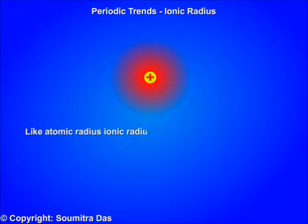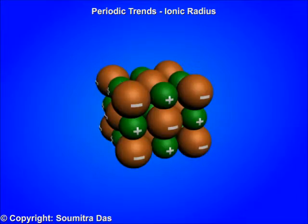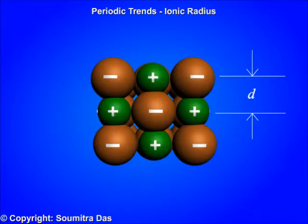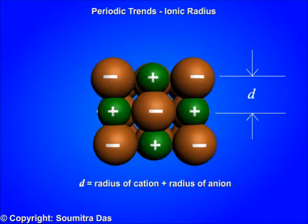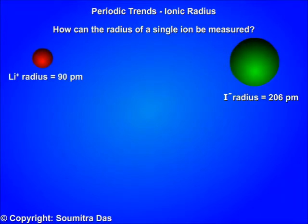Like atomic radius, ionic radius is difficult to measure because there is no sharp boundary of the outer electron clouds of an anion. The minimum distance between a cation and anion is measured by X-ray crystallographic method. This distance gives the sum of ionic radii of the cation and the anion. But how can we know the radius of a single ion?